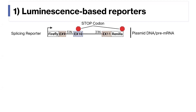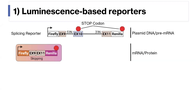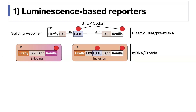The first way in which we engineered our reporters is for use in luminescence-based assays. We flanked our mini-gene with a firefly luciferase open reading frame upstream of the mini-gene and a ranilla luciferase open reading frame downstream. We also introduced a stop codon into the alternatively spliced exon. When the reporter is transcribed and spliced in the cell, two isoforms result: a skipping isoform, where both firefly and ranilla are translated and expressed, and an inclusion isoform, where translation halts at the alternative stop codon and you just see expression of firefly. The ranilla to firefly ratio therefore gives us an estimate of the number of skipping isoforms relative to the total of skipping and inclusion.